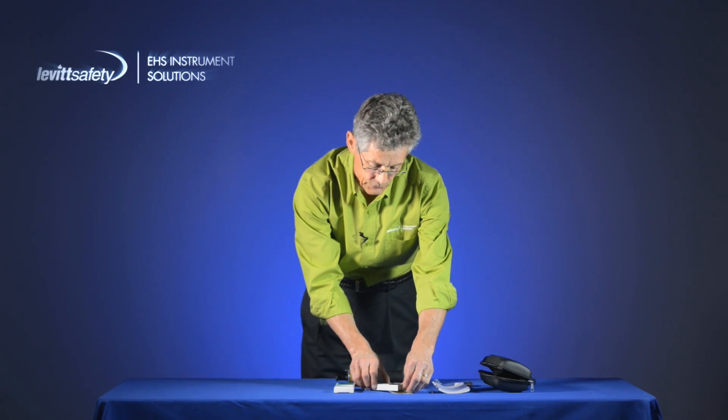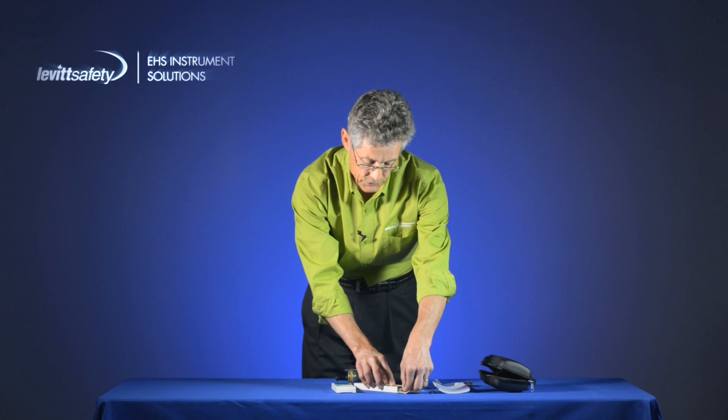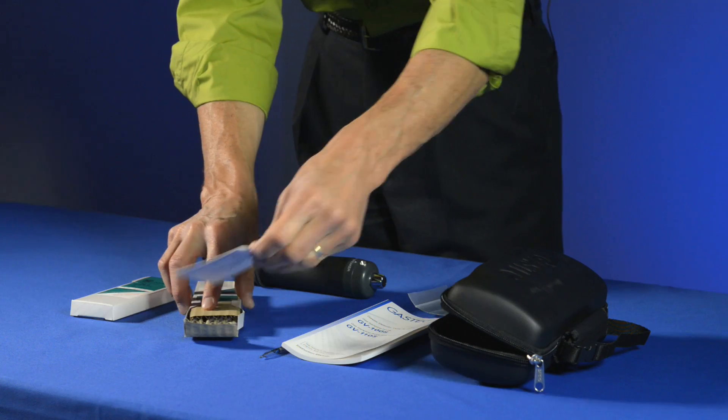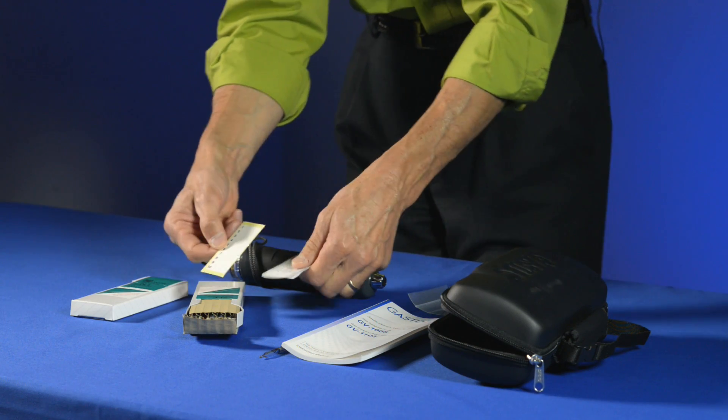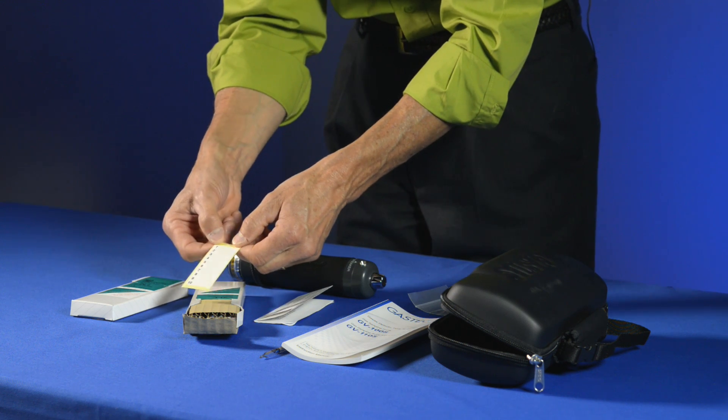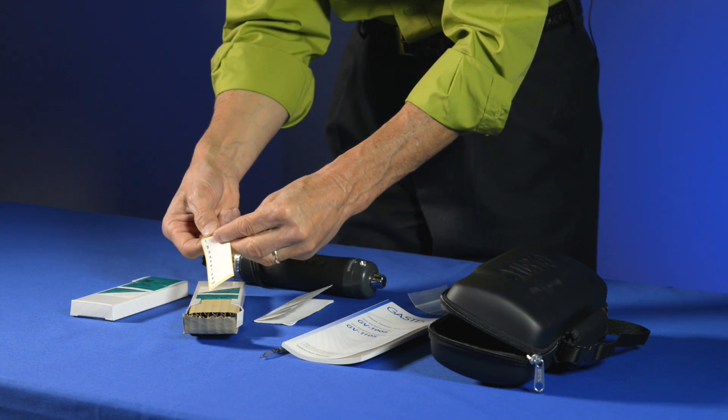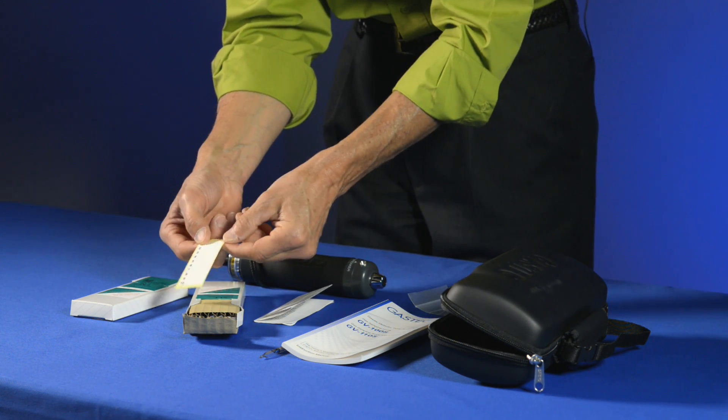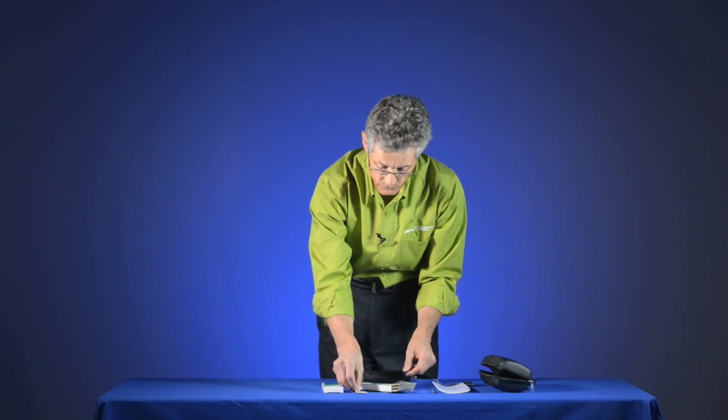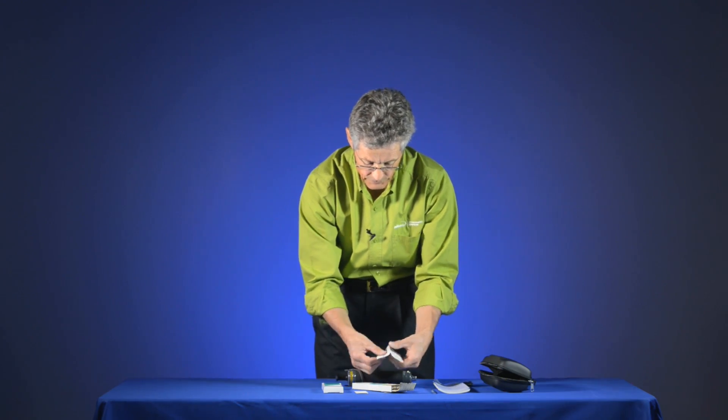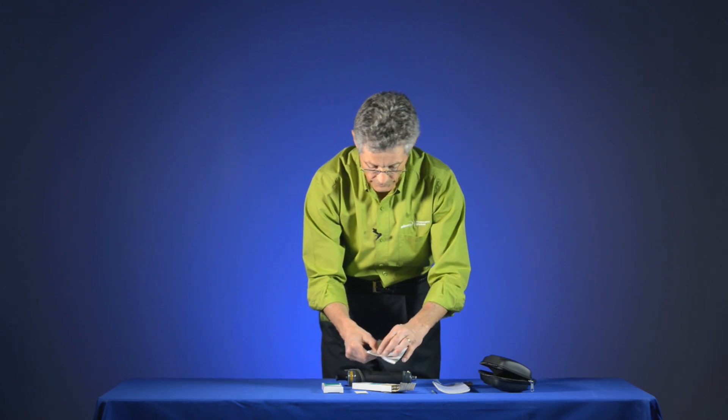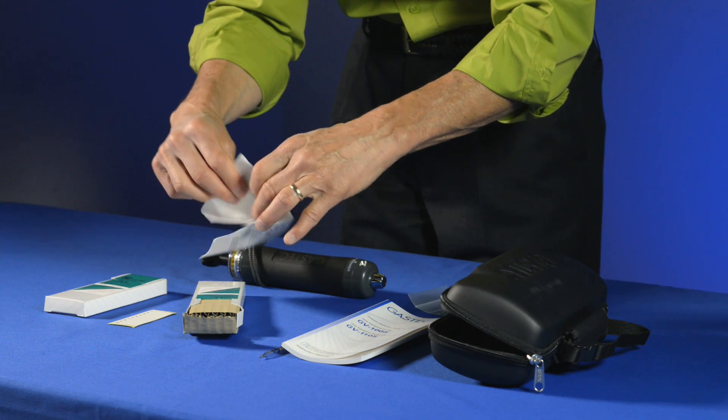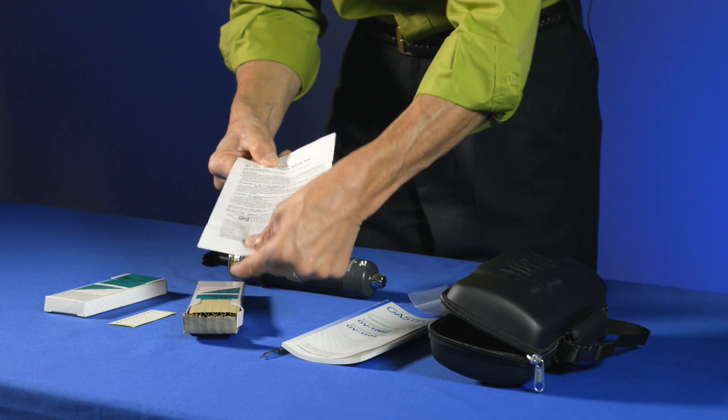So inside every box of tubes, besides the tubes, there are two other pieces of information. One is a little card where you can write some notes on and peel them off and put them on the tube once you've completed your sampling, because the tubes aren't a permanent record of the gas concentration. And then the other is the instruction for the actual detector tubes that you're going to be using.